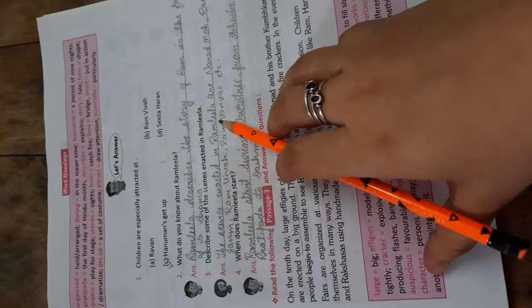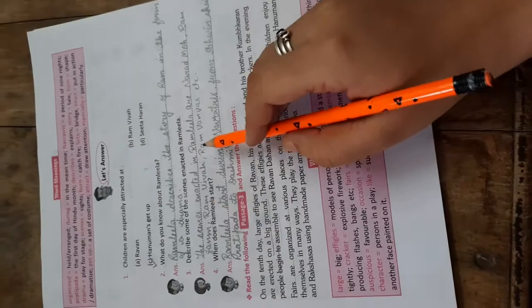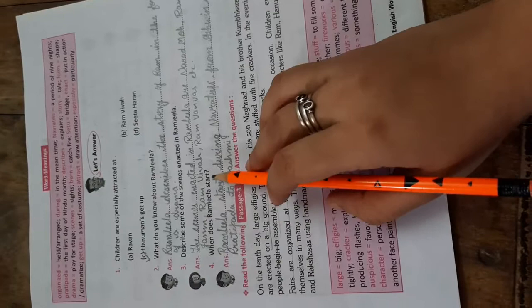Describe some of scenes enacted in Ram Lila. The scenes enacted in Ram Lila are Naratmo, Ram Janam, Ram Vivah and Ram Vanvas etc.